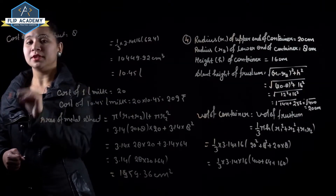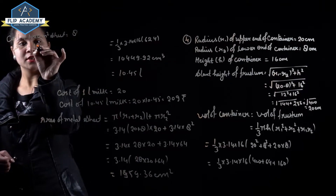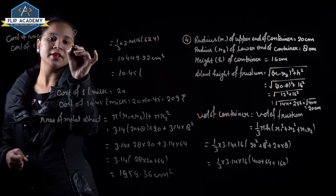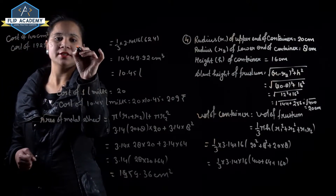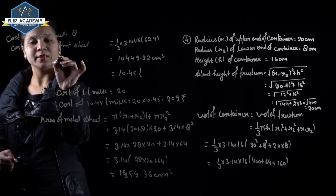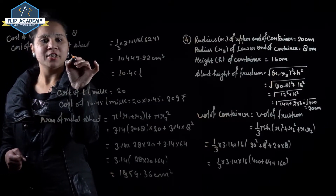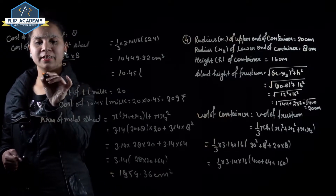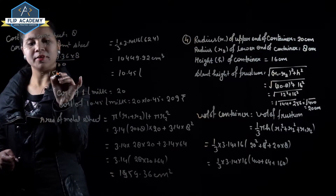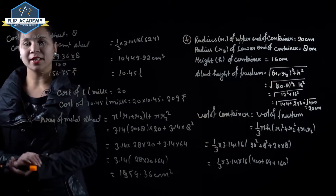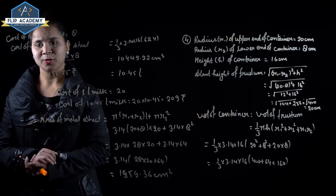Cost of 100 centimeter square sheet equals 8 rupees. So cost of 1,959.36 centimeter square sheet equals 1,959.36 into 8 upon 100, which is equal to 156.75 rupees. Question number 4 is complete.